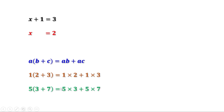Now let me put a equal to 5, b equal to 3 and c equal to 7. Then 5 into 3 plus 7 equal to 5 into 3 plus 5 into 7. 3 plus 7 is 10, 5 into 10 is 50. 5 into 3 is 15, 5 into 7 is 35, and 15 plus 35 is 50. So this equation is true when a is 5, b is 3 and c is 7 also. We can see that this equation is true whatever value we give for a, b and c. That means this equation is always true.